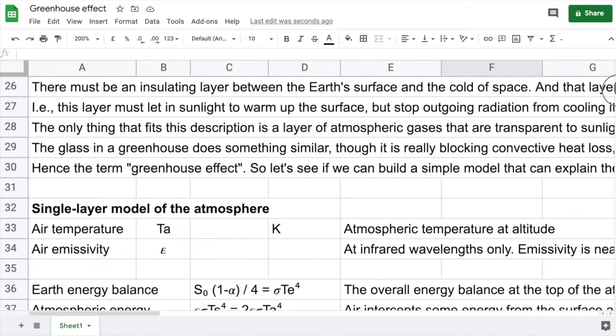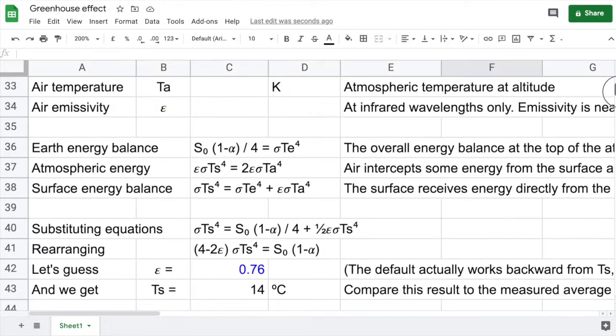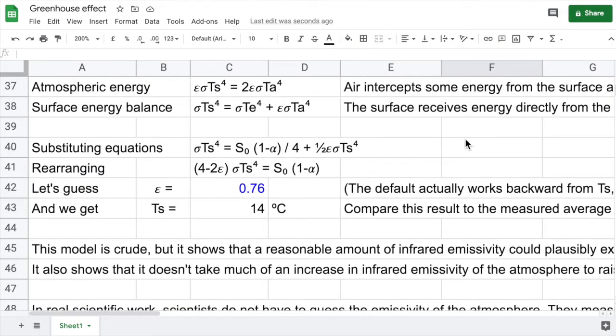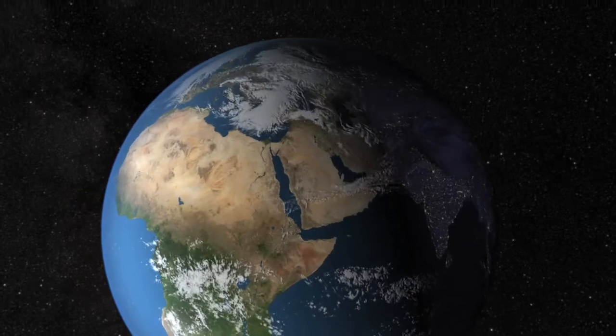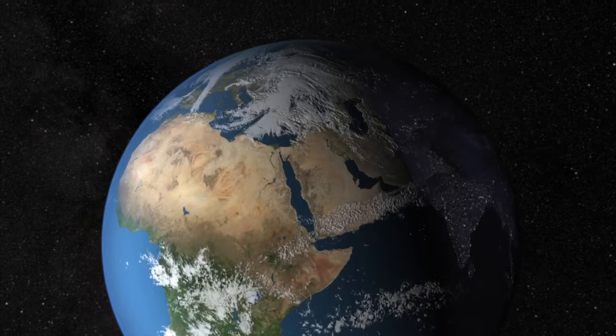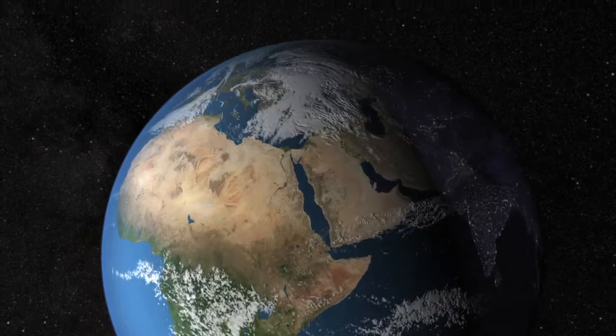Now, real climate scientists use much more complicated models that break up the atmosphere into different layers, where chemical composition varies with altitude, and they use the measured emissivity of component gases across the full spectrum of wavelengths, and they account for convective heat transfer.